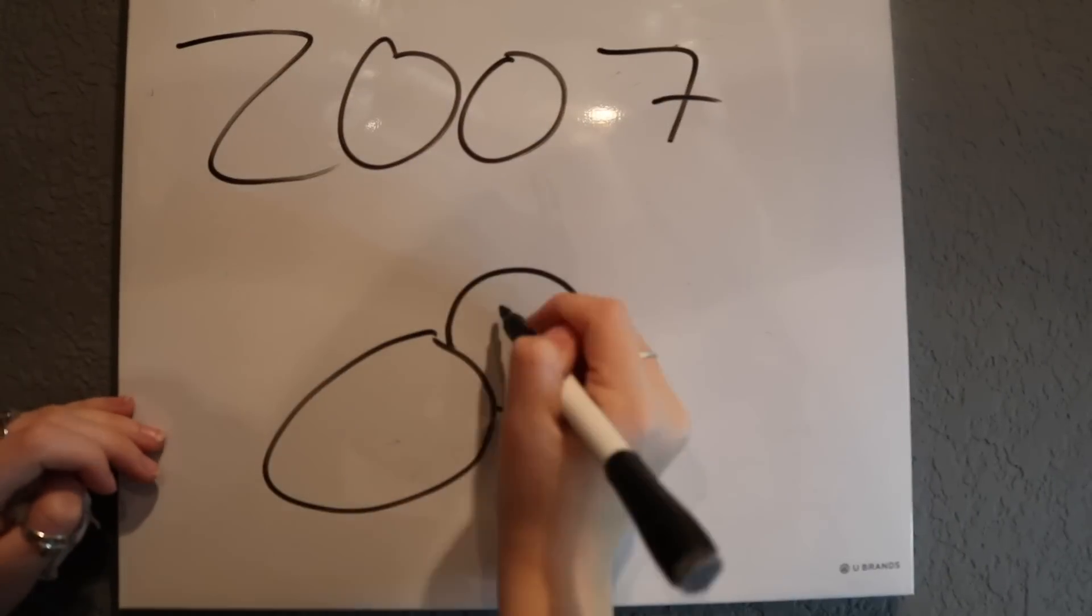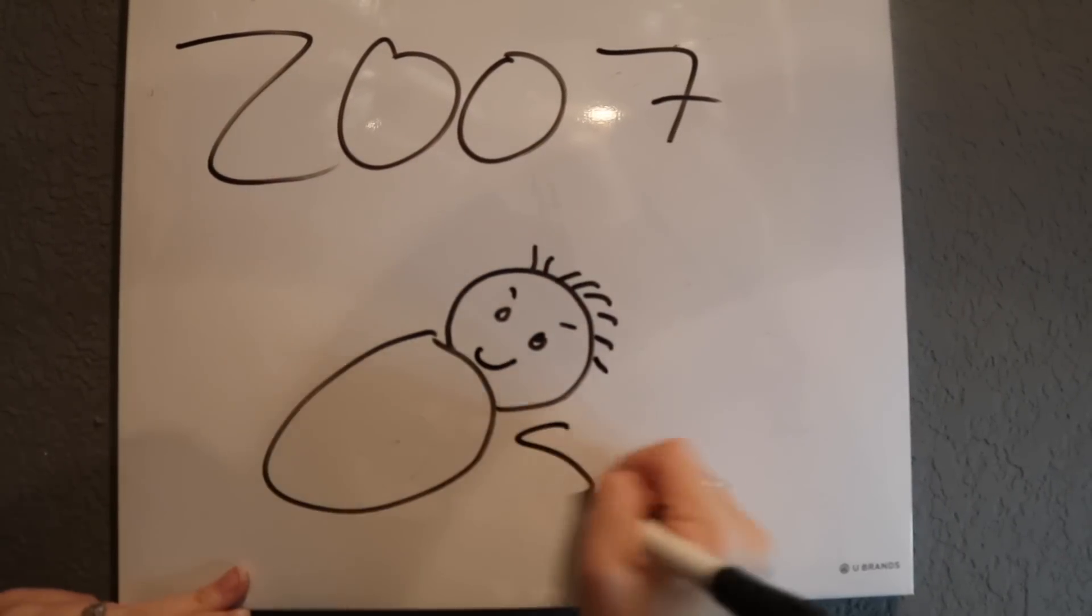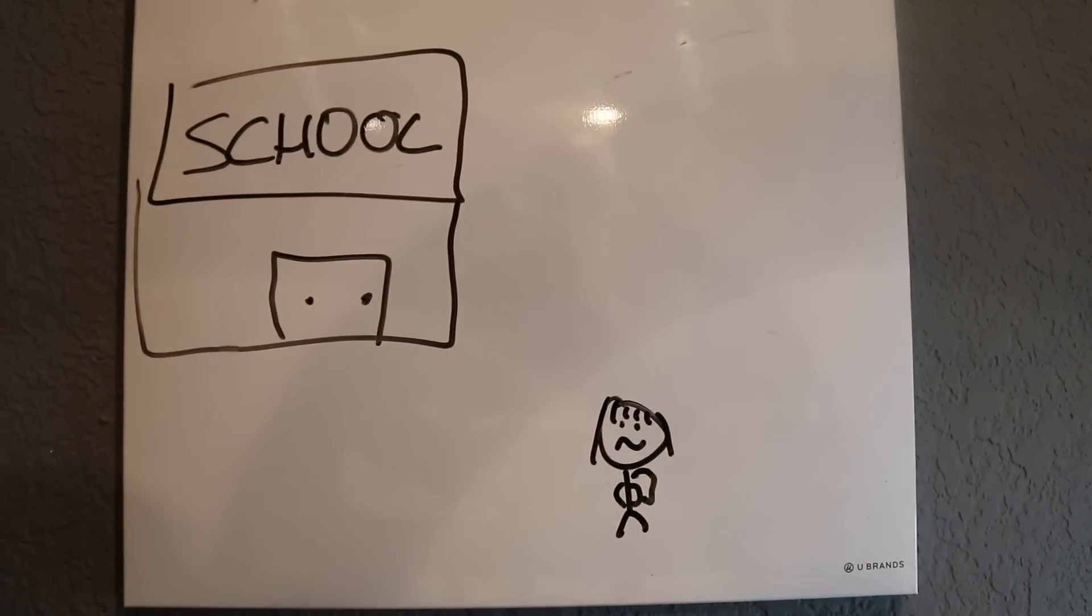While I was in speech therapy, my mom got pregnant with my little brother, Stone. He was born in 2007 and came out looking just like my sister. By the time I started kindergarten, my speech was a lot better. But every morning before school, I would get really nervous and get an upset stomach.